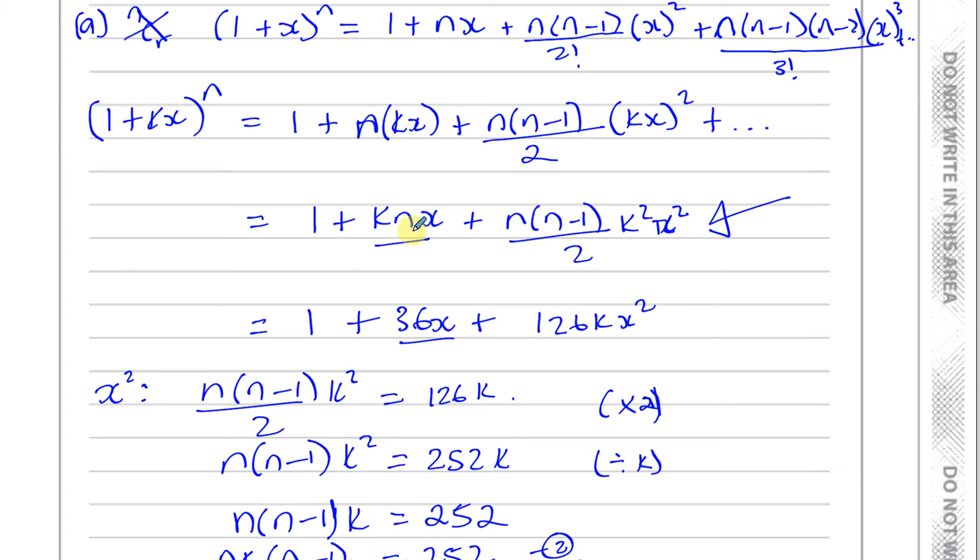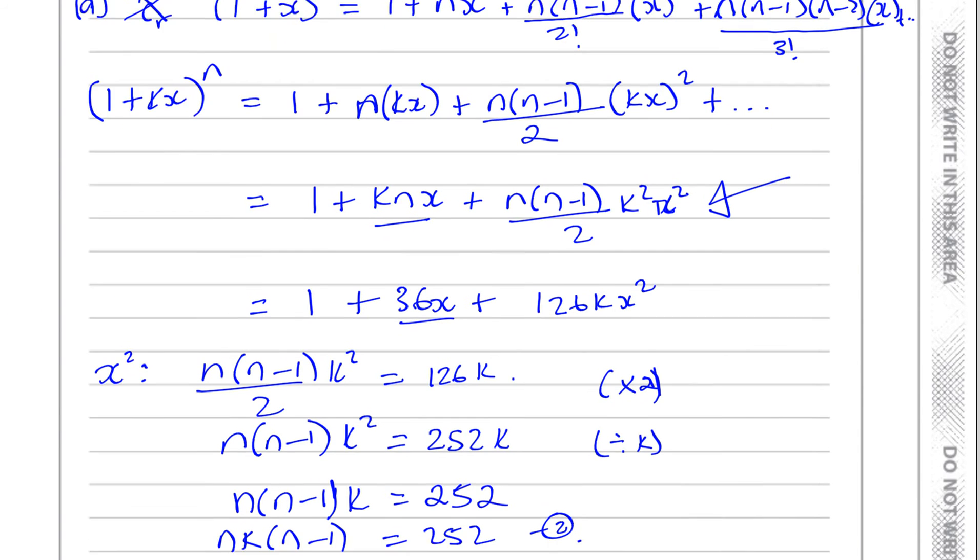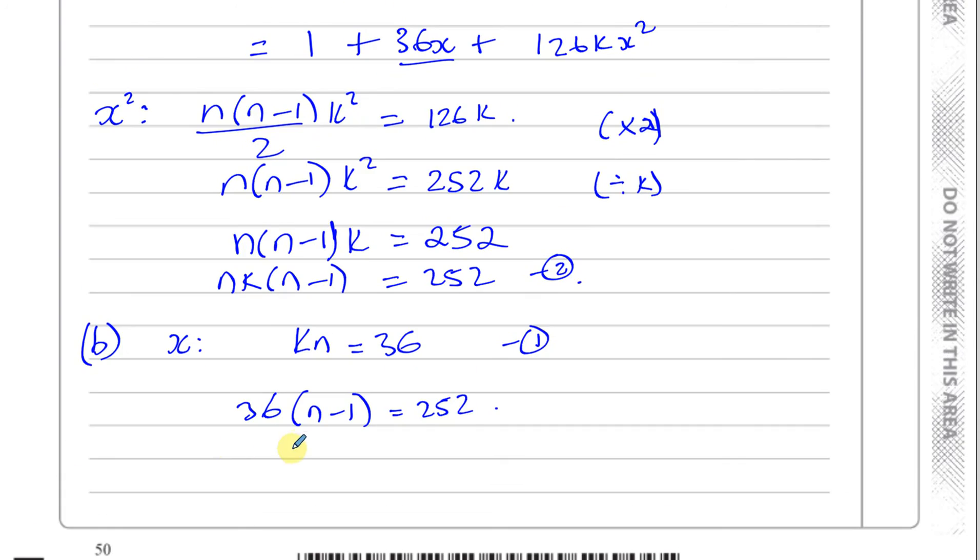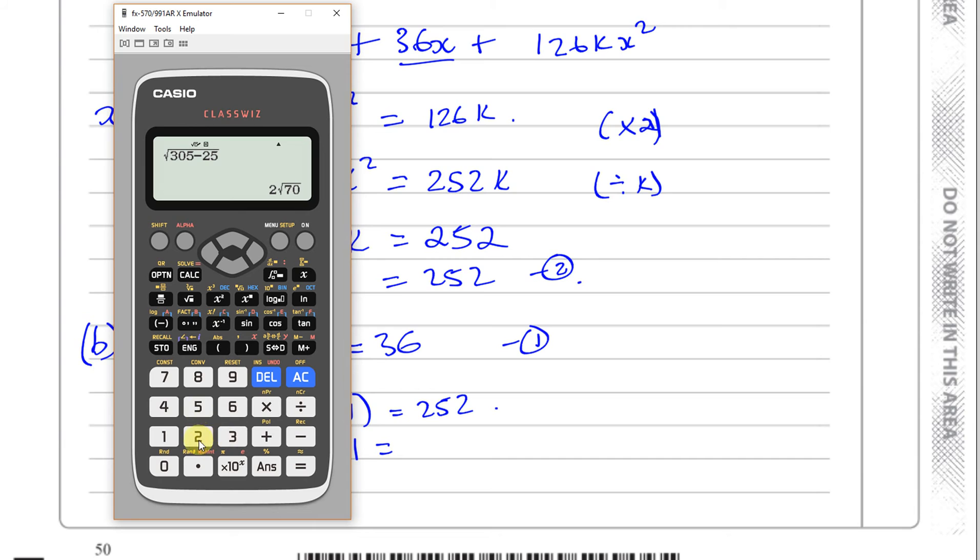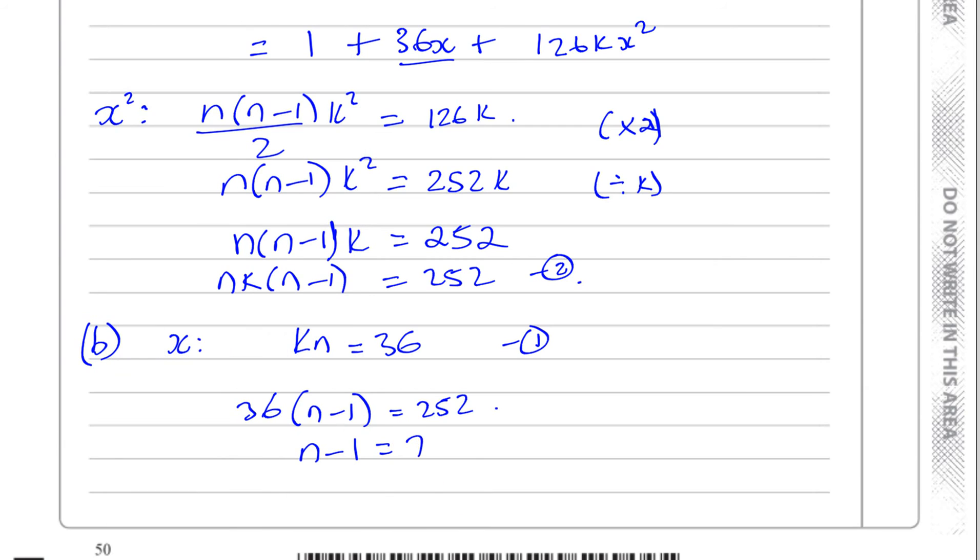Okay, so now we have n minus 1 is equal to 252 over 36. So, 252 divided by 36 gives us 7. That means n is equal to 8.